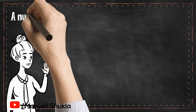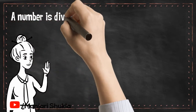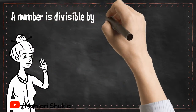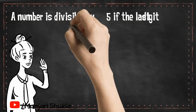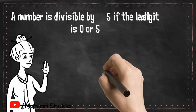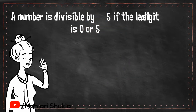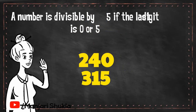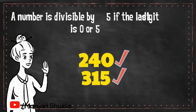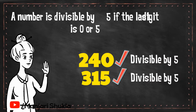Divisibility Rule 5. A number is divisible by 5 if the last digit is 0 or 5. For example, the numbers 240 and 315 are divisible by 5 because the last digits are 0 or 5.